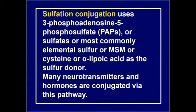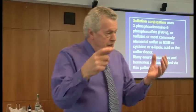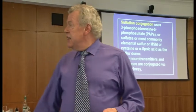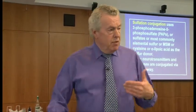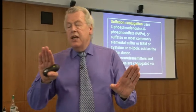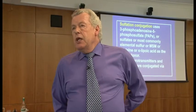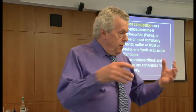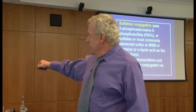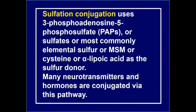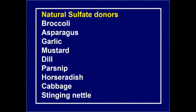Sulfation uses PAPs — the active form of sulfur called phosphoadenosyl phosphosulfate, or PAPs. Sulfur sources are most commonly found in the amino acid cysteine, alpha-lipoic acid foods, and MSM — methylsulfonylmethane — which is a good support for the joints, for chondroitin sulfate and glucosamine sulfate in arthritis. Many neurotransmitters are broken down or detoxified by sulfur. The natural foods are broccoli, Brussels sprouts, cruciferous vegetables, and asparagus.